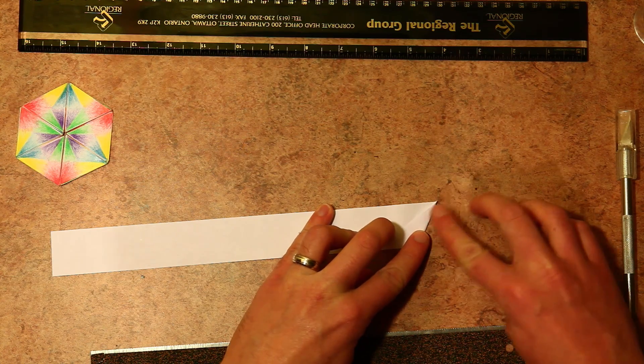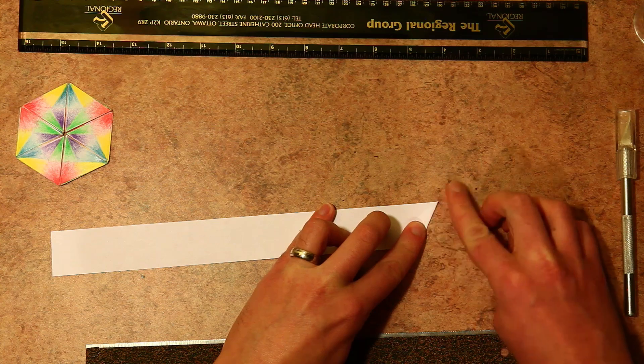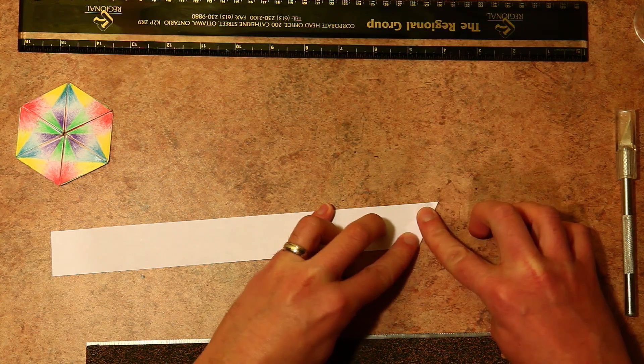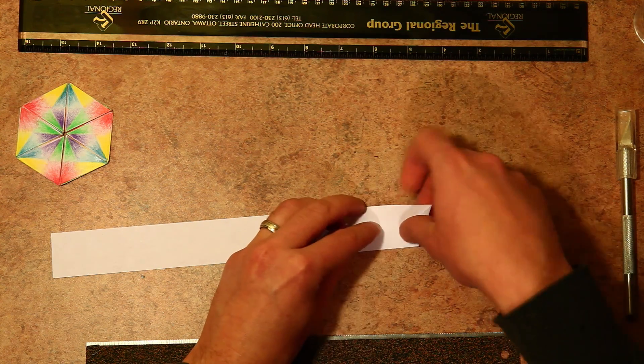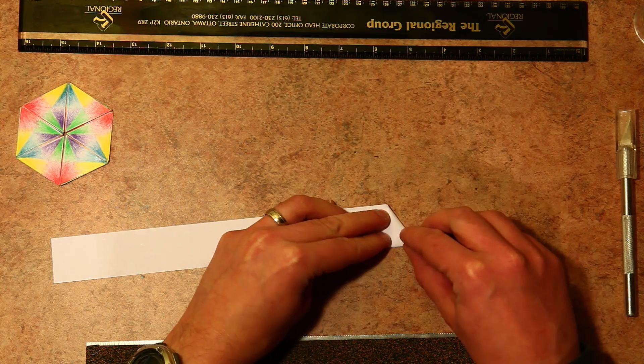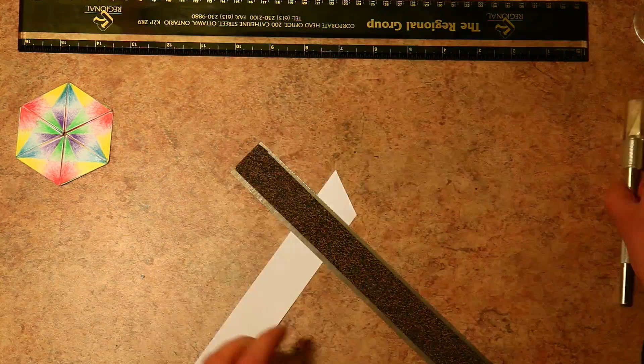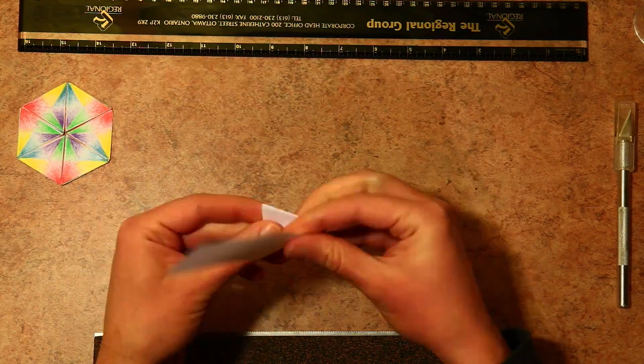And really you don't have to be too exact here. I found that these things work best when you're close, but you don't have to worry about being right on. And then once we get this folded into triangles here, then we'll count out nine triangles and cut off the excess.